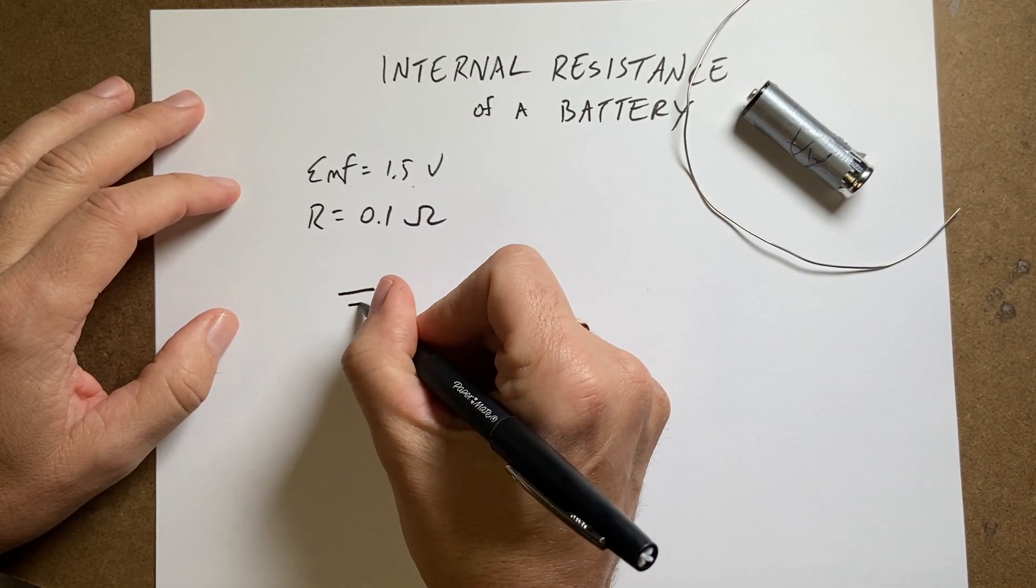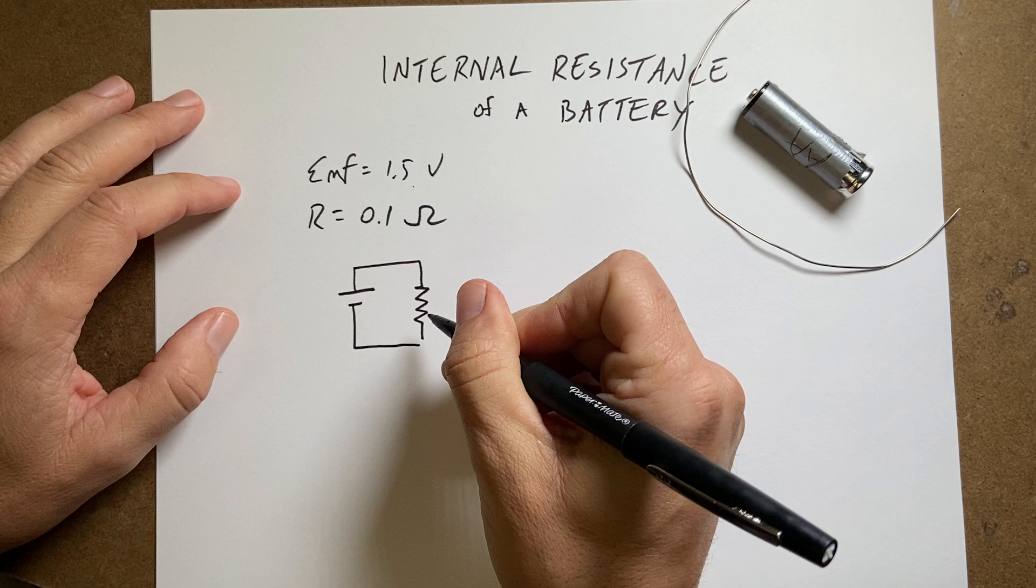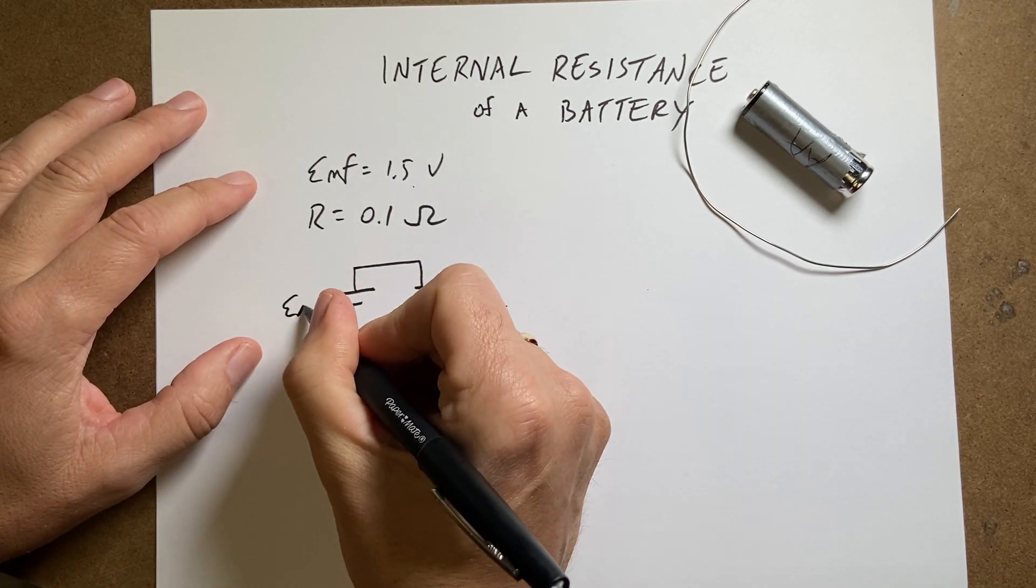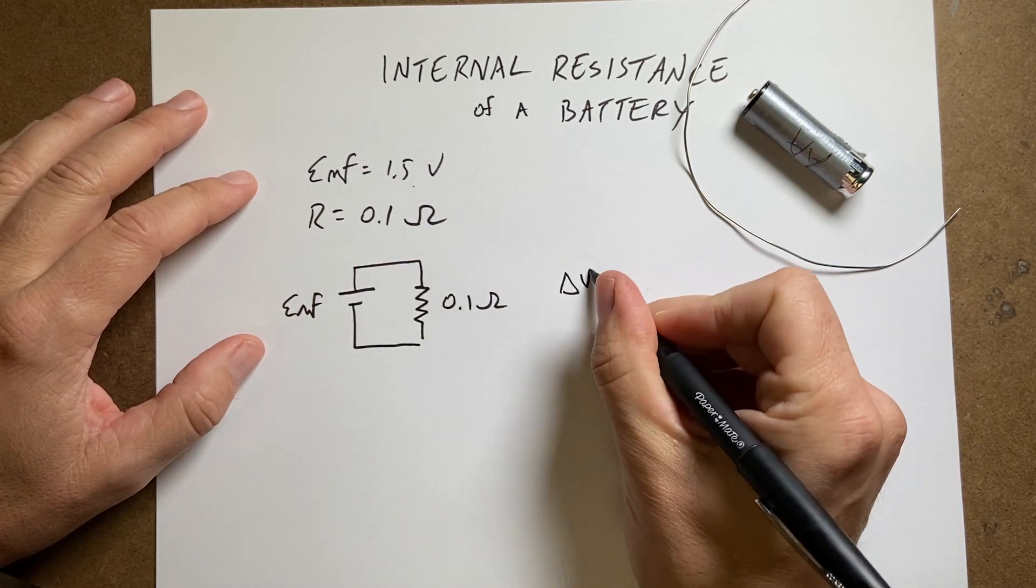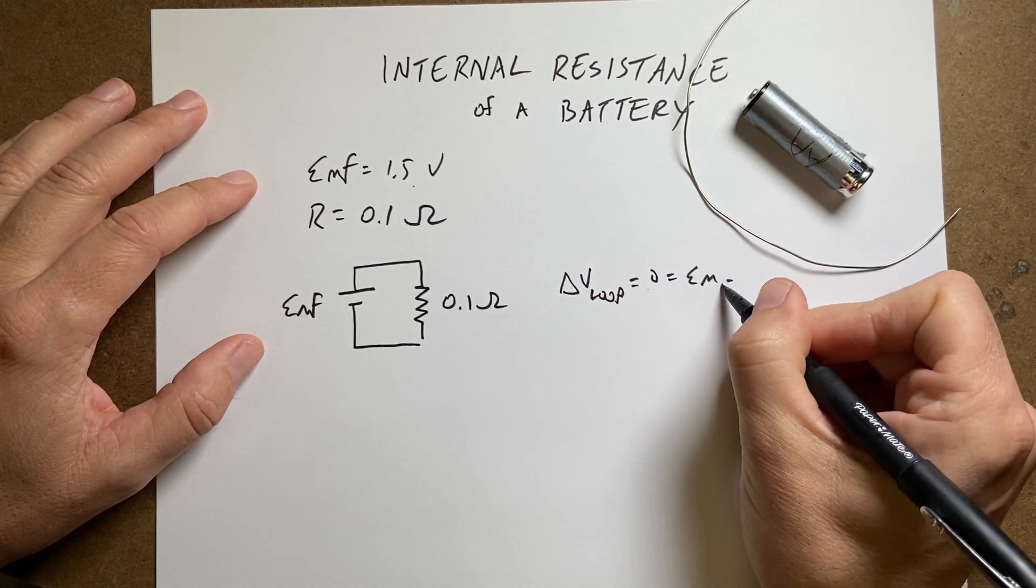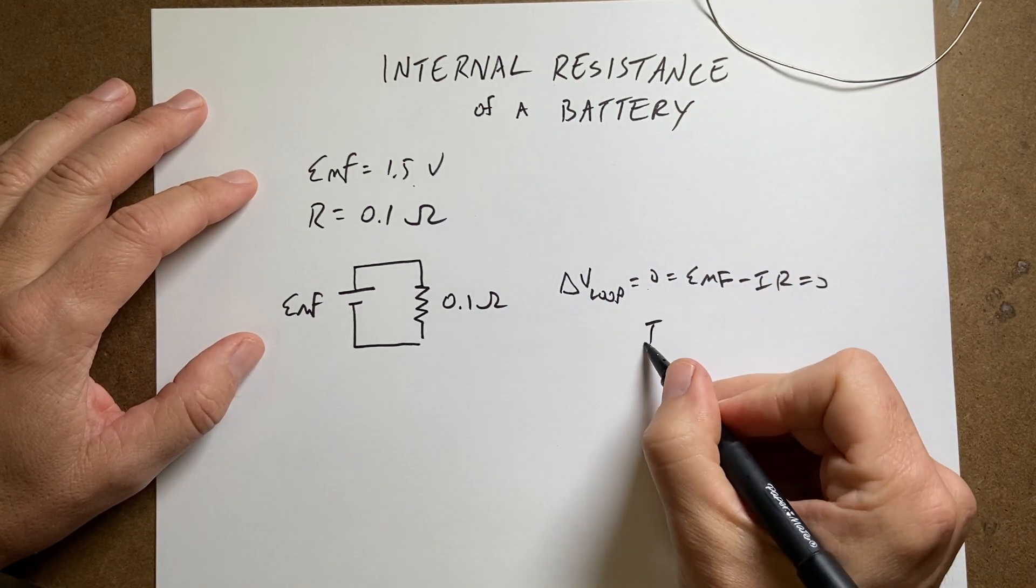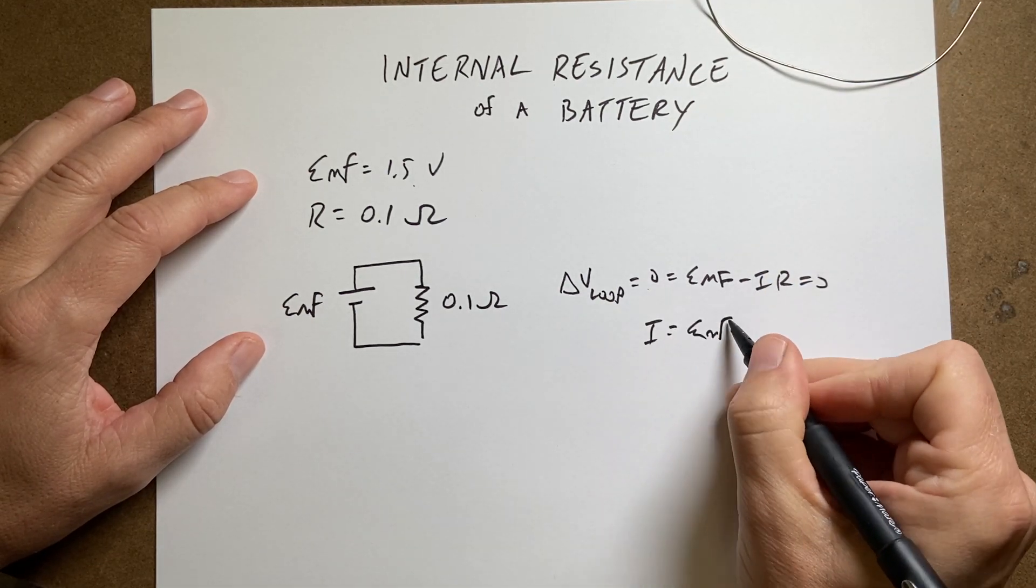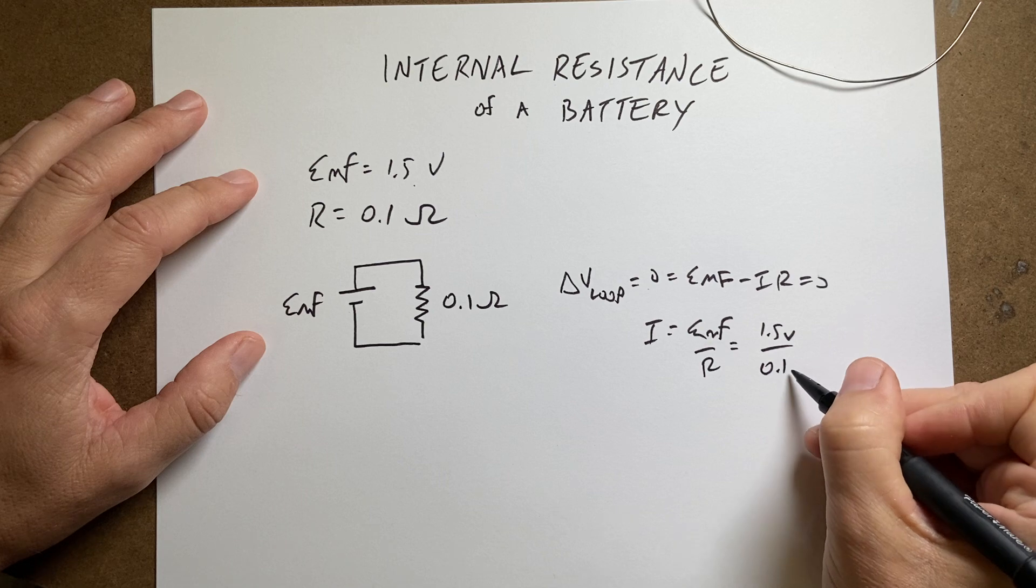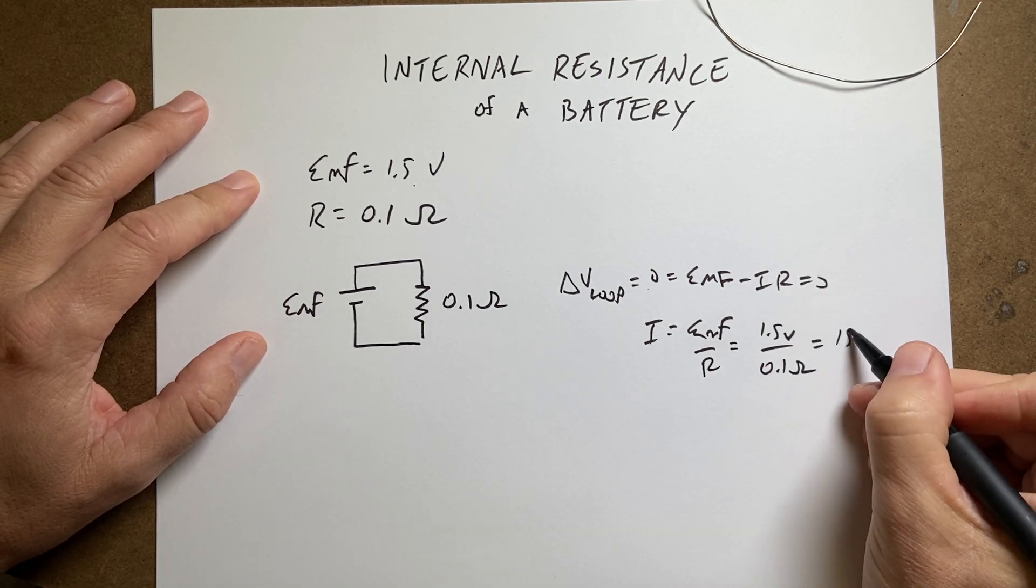So here I have my battery and then I have super wires connected to my 0.1 ohm resistor. And that's my EMF. So the loop rule says that delta V loop equals zero. And that would be EMF minus IR equals zero. So if I solve for I, I get I equals EMF over R. So that would be 1.5 volts over 0.1 ohms. And I can actually do that in my head without using Python. And I get 15 amps.